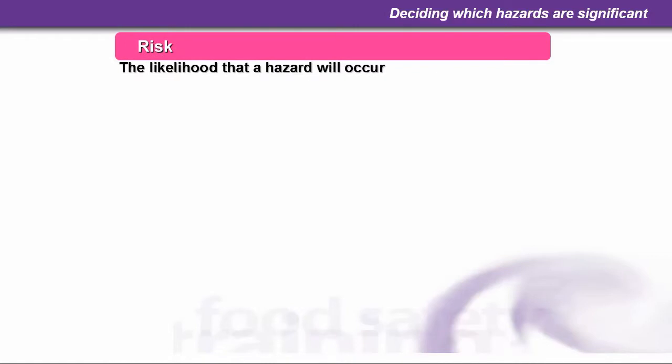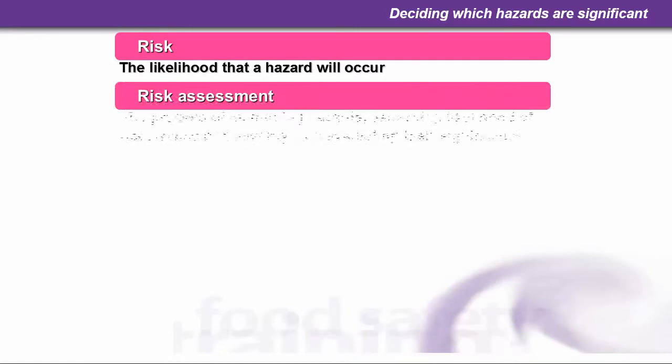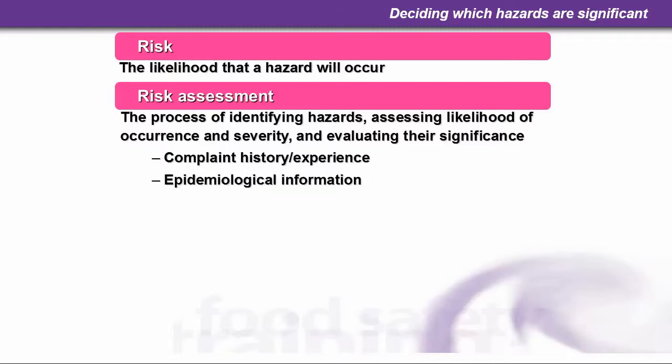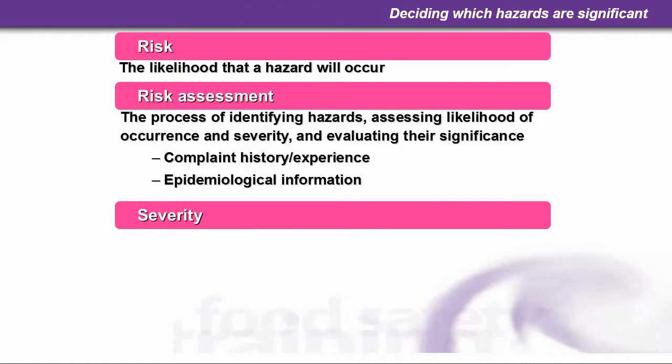When deciding which hazards are significant, let's look at some definitions. Risk is the likelihood that a hazard will occur. Risk assessment is the process of identifying hazards, assessing the likelihood of occurrence and severity, and evaluating their significance. You need to look at complaint history, personal experience, and experience of others within the business, as well as epidemiological information.